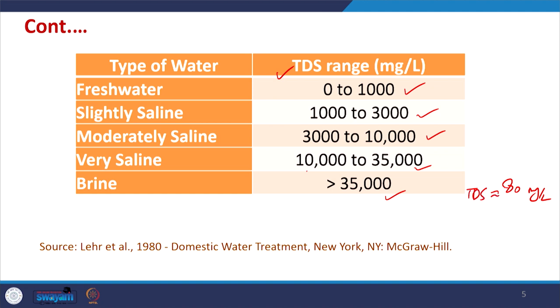The RO water we commonly drink generally has a TDS of around 80 mg/L, which is not good for our health. We should always try to use water with a TDS of more than 150 mg/L and up to 250 mg/L for daily drinking, as it helps maintain nutrient levels in our body. If we use water with a TDS of 80 mg/L we are not getting sufficient minerals, and we then need pharmaceuticals to maintain those mineral levels.